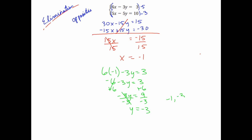Remember to write this as a coordinate: negative 1 comma negative 3. Always go back and check — plug this into both equations. 6 times negative 1 is negative 6; 3 times negative 3 gives minus a negative 9, but with the minus that's plus 9. So negative 6 plus 9 is 3. That works. And 5 times negative 1 is negative 5; minus 5 times negative 3 would make negative 15, but the minus makes it plus 15. Negative 5 plus 15 is 10. That one also works.